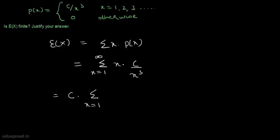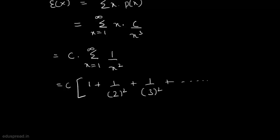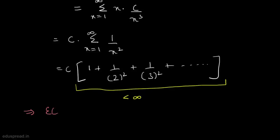We can take c outside as it is a constant. So this is equal to c times the sum from x equals 1 to infinity of 1 divided by x square. And this equals c times the series 1 plus 1 divided by 2 square plus 1 divided by 3 square, and so on. This is an infinite series, and we have enough proofs available to show that the sum of this infinite series is less than infinity. So this implies that expected value of x is finite, because it is c multiplied by a number that is less than infinity.